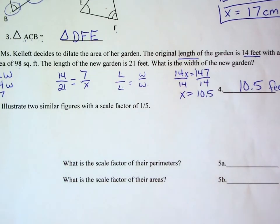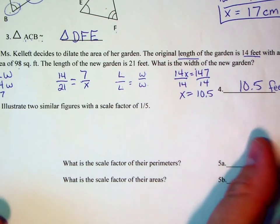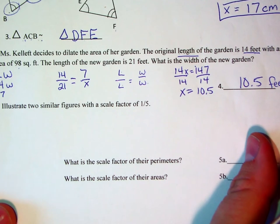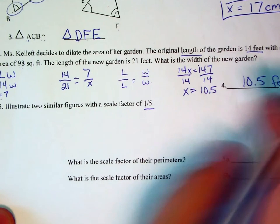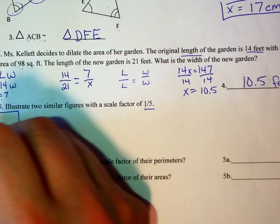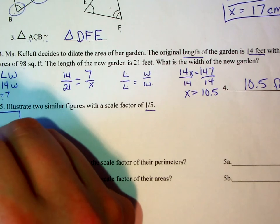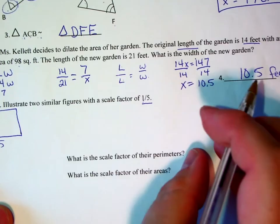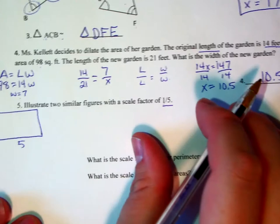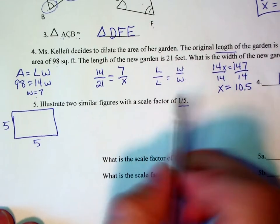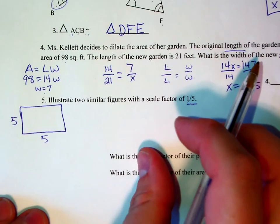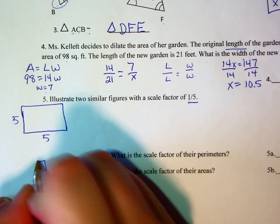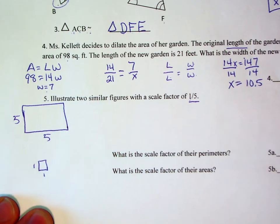Number 5, illustrate two similar figures with a scale factor of 1 fifth. Well, if it has a scale factor of 1 fifth, that means that it is decreasing in size. So we will start out with my illustration that's going to be a 5 by 5. And I do 5 by 5 because that will make it simple for me to apply that scale factor. 1 fifth of 5 is simply 1. So that will end up with a 1 by 1.